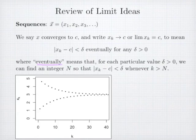The idea of eventually refers to the idea that no matter what delta we have, we can always find an integer N so that after that value of N, in other words for the index greater than that integer N, the sequence distance from the value C is less than delta.